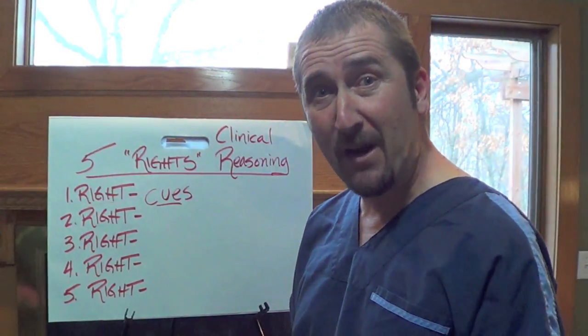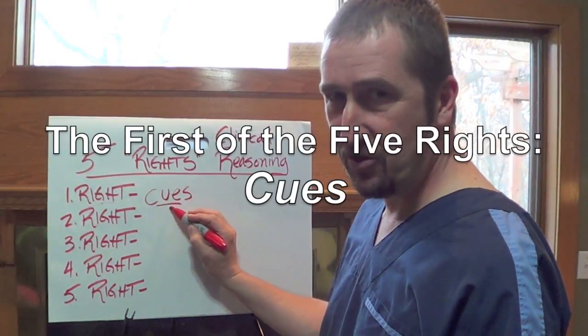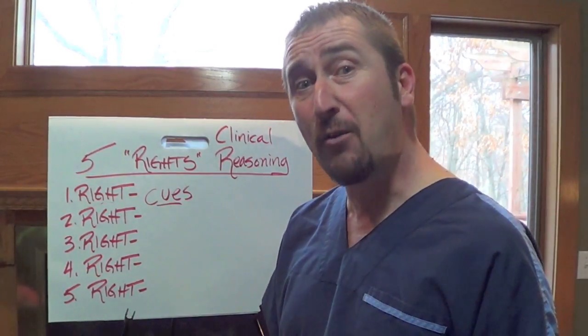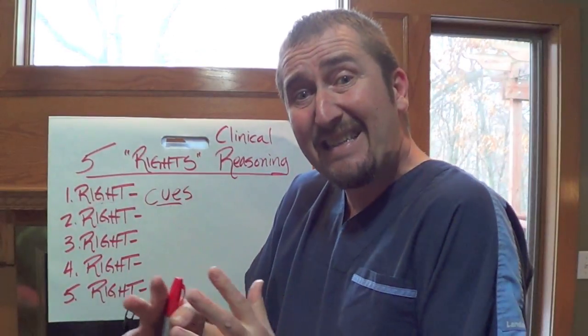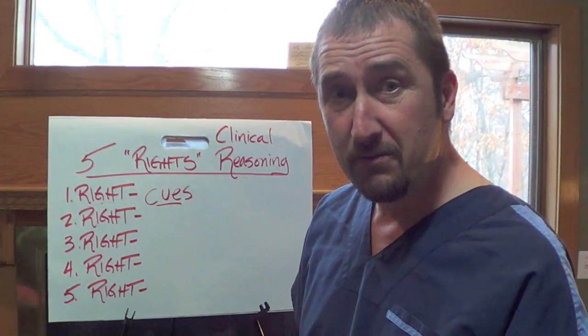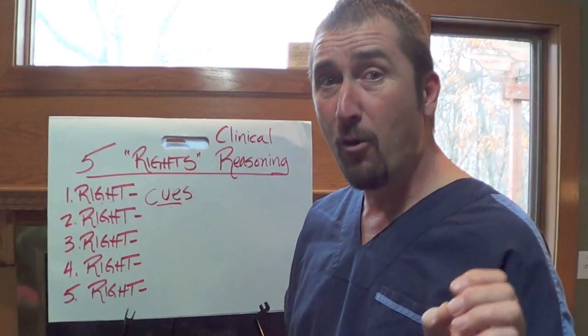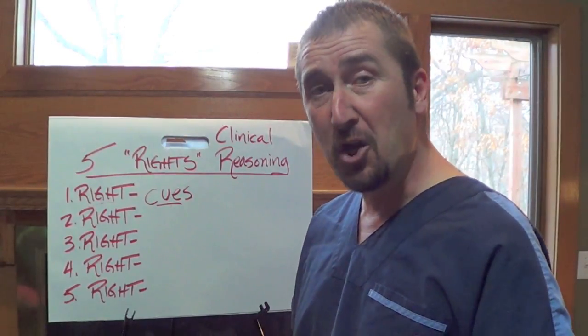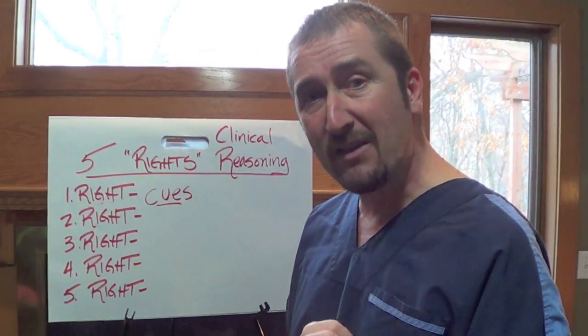Let's make it a priority in nursing education to have these five rights just as well known and memorized by every student who leaves our program to ensure safe practice. The first right is the right cues. Cues are the clinical data collected and clustered by the nurse. Recognizing the relevance and relationships of this clinical data and contextualizing it to your patient is the very essence of this right. When early cues or clinical data are missed or not recognized, this allows a complication to progress — a classic example of failure to rescue.